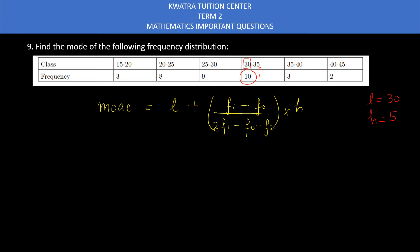Now we will mark F0, F1, and F2. F1 is the frequency of the modal class, which is 10. F0 is the frequency of the preceding class, which is 9. F2 is the frequency of the successive class, which is 3. Now we substitute into the formula: L is 30, F1 is 10, F0 is 9, divided by 2 into 10, minus F0 which is 9, minus F2 which is 3. H is 5.